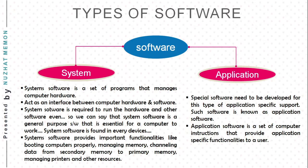System software is a general purpose software that is essential for a program to work. It is found in every device — smart watches, smartphones, laptops, personal computers — all these devices have system software. System software provides important functionalities like booting computers, managing memory, channeling data from secondary to primary memory, and managing printers, projectors, and scanners.